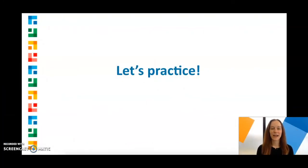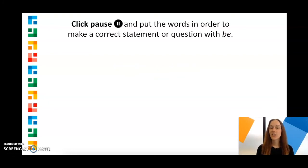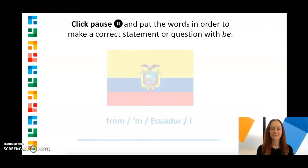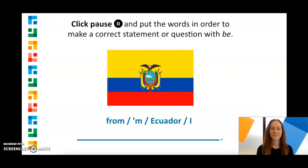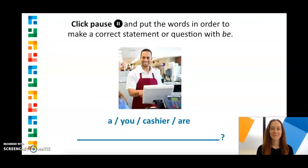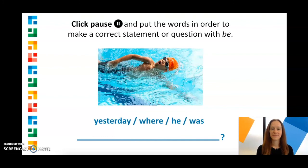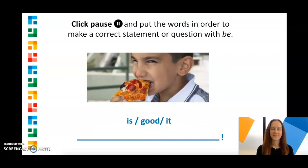Alright, now let's practice. Click pause and put the words in order to make a correct statement or question with be. The answer is: I'm from Ecuador. Are you a cashier? Where was he yesterday? It is good.